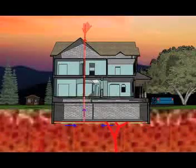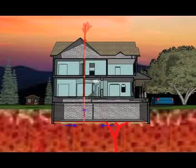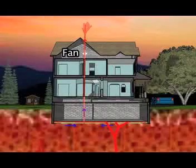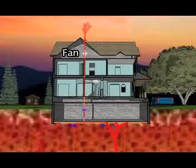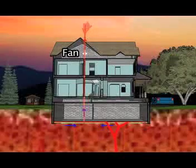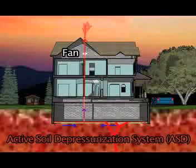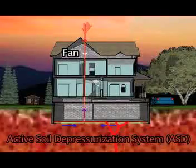Sometimes a passive system isn't enough to sufficiently eliminate radon and soil gas entry. In these cases, a fan is needed. The fan is typically installed in the attic, and depending on its size, it can draw a large volume of air up the pipe. A system like this is known as an active soil depressurization system, or ASD.